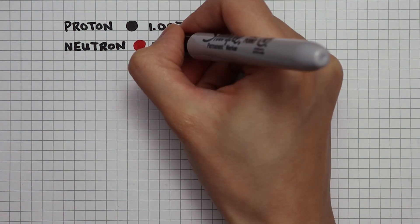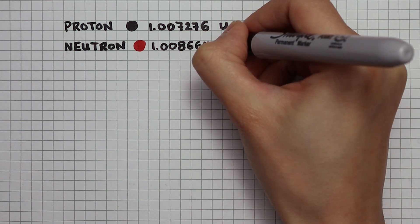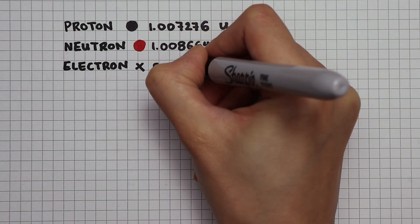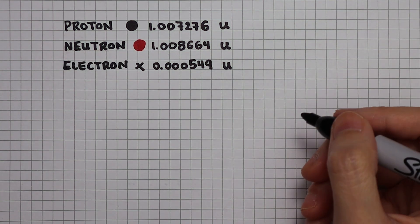A neutron has a mass of 1.008664u, and an electron, 0.000549u.